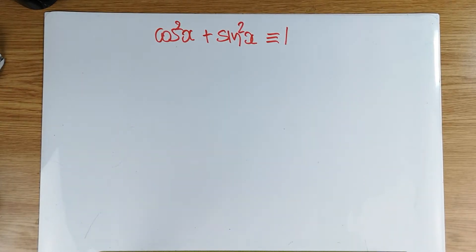Hello and welcome. Cos squared x plus sine squared x is identically equal to 1. Let's try to make an attempt to actually prove it.